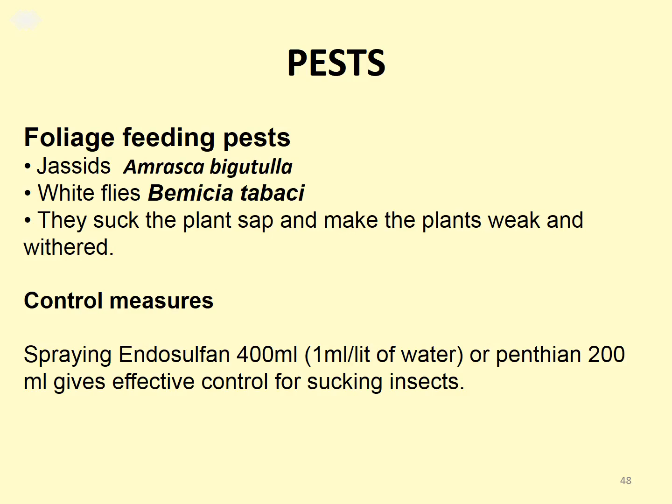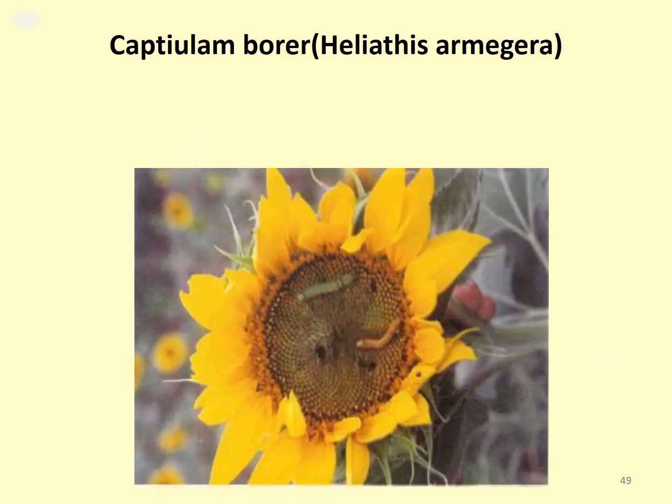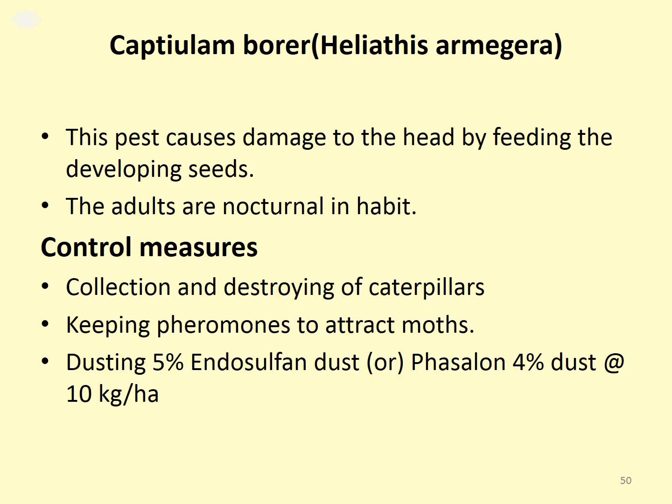Major pests include foliage-feeding pests. The first is the jassid (Amrasca biguttula biguttula), and the white fly (Bemisia tabaci). These are sucking pests that suck plant sap and make plants weak. To control them, Endosulfan 400 ml at the rate of 1 ml per litre of water or Pantheon 200 ml gives effective control. Another important pest is the Capitulum Borer, which causes severe yield and oil yield loss by feeding on developing seeds. Adults are nocturnal in habit. Control measures include collection and destruction of caterpillars, keeping pheromone traps, and dusting 5% Endosulfan dust or Phosalone 4% dust at the rate of 10 kg per hectare.